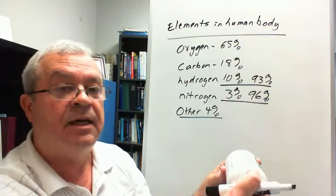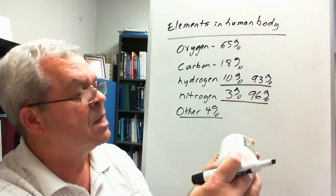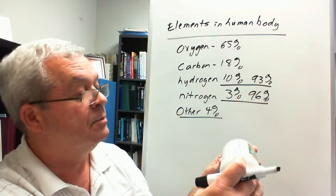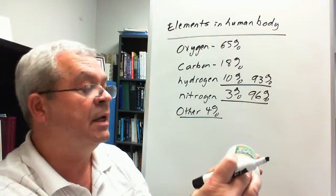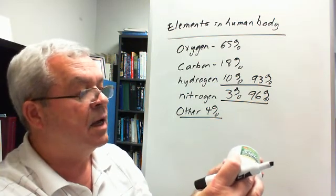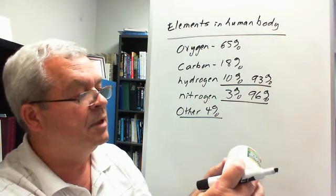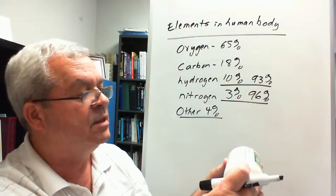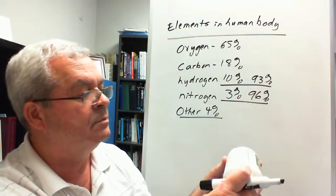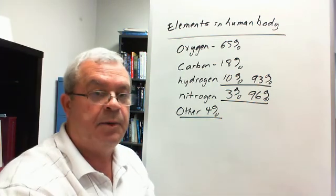What elements do I see on this label here? Let's see, calcium, iron, phosphorus, iodine, magnesium, zinc, selenium, copper, manganese, chromium, molybdenum, chlorine, potassium, boron, silicon, vanadium, and that's it. How many was that?